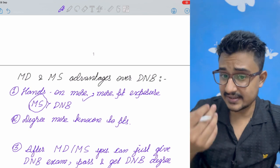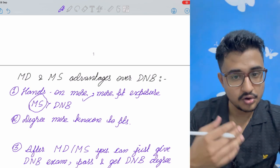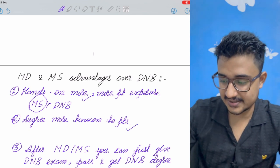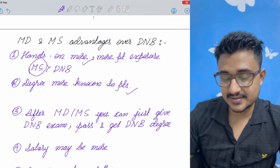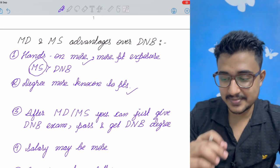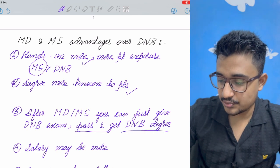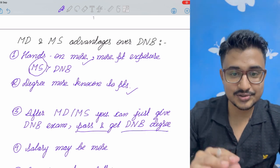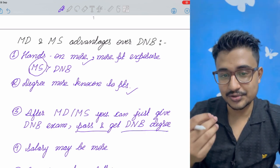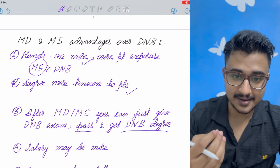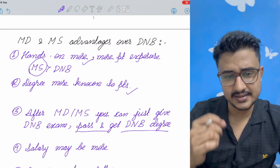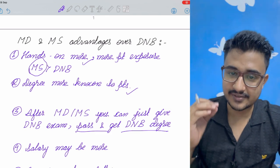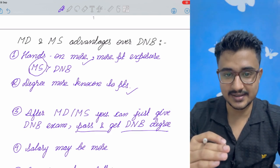Now MD-MS the degree is more known to the common public and it has more acceptance rate as I said. After MD-MS you can just give the DNB exam and if you pass you get the DNB degree. So this is the biggest advantage. If you have the certificate of MD and MS then you just give the DNB exam and if you pass the exam you get the DNB degree.